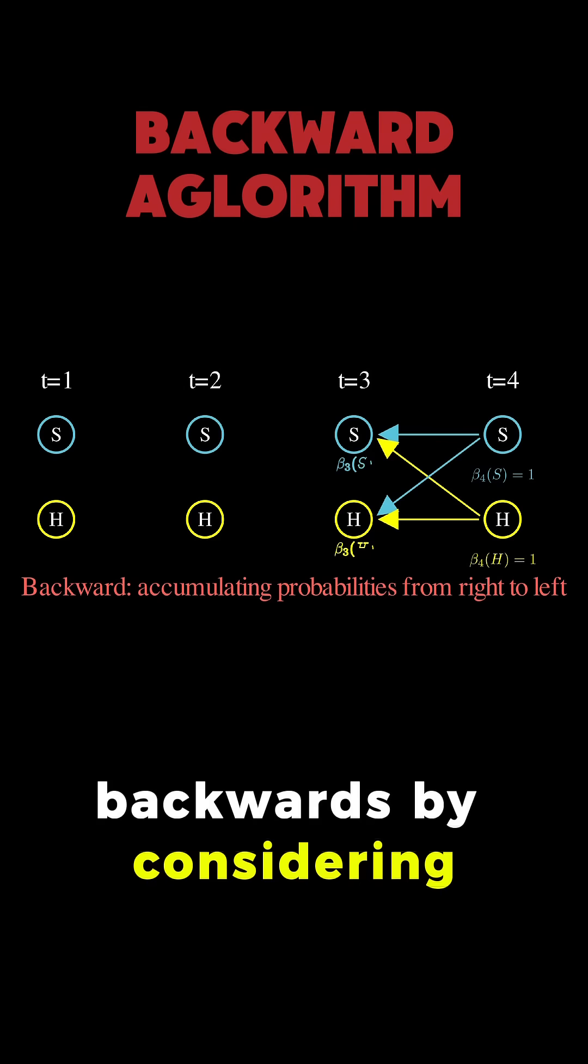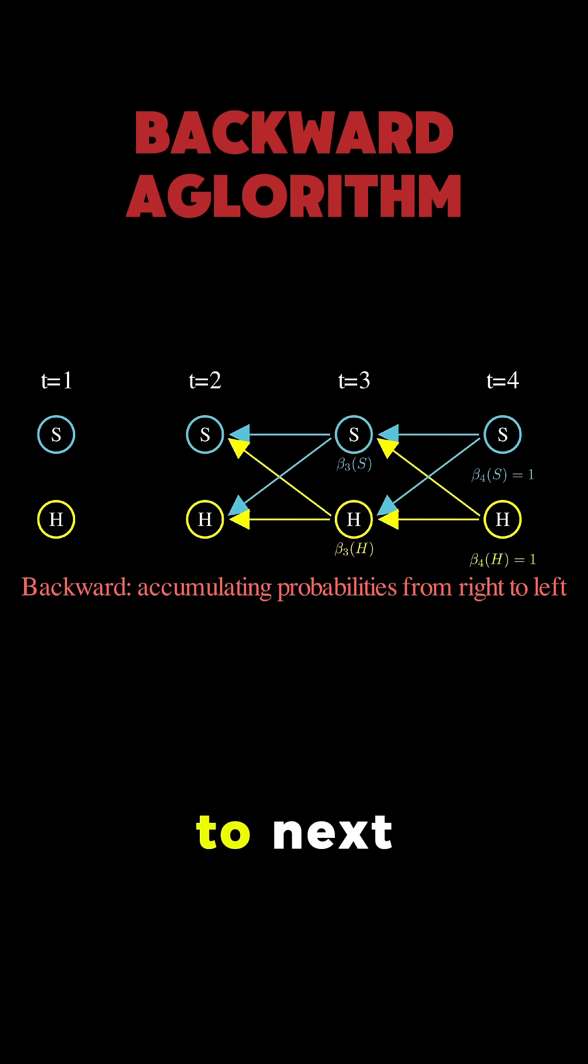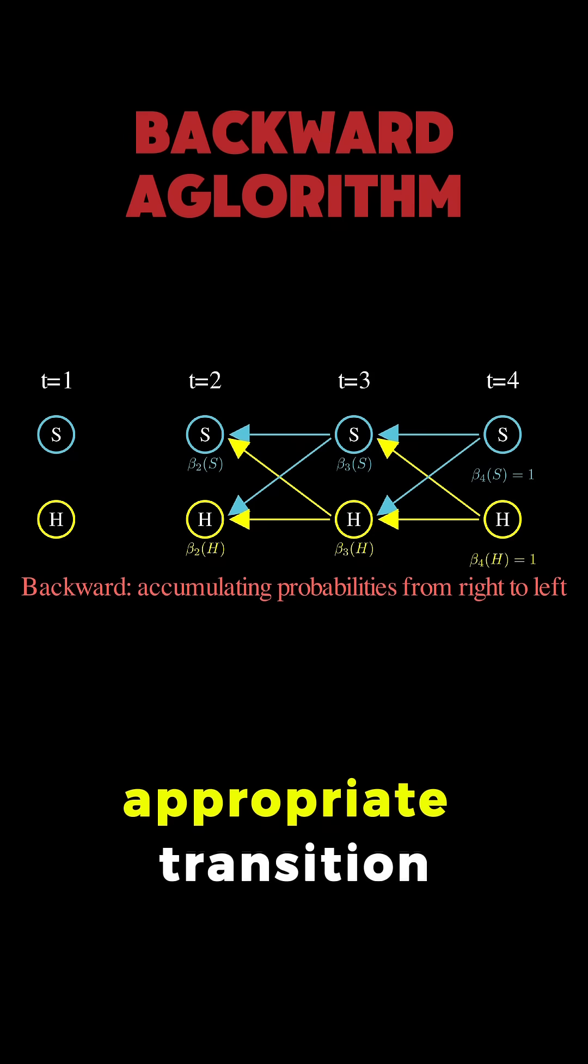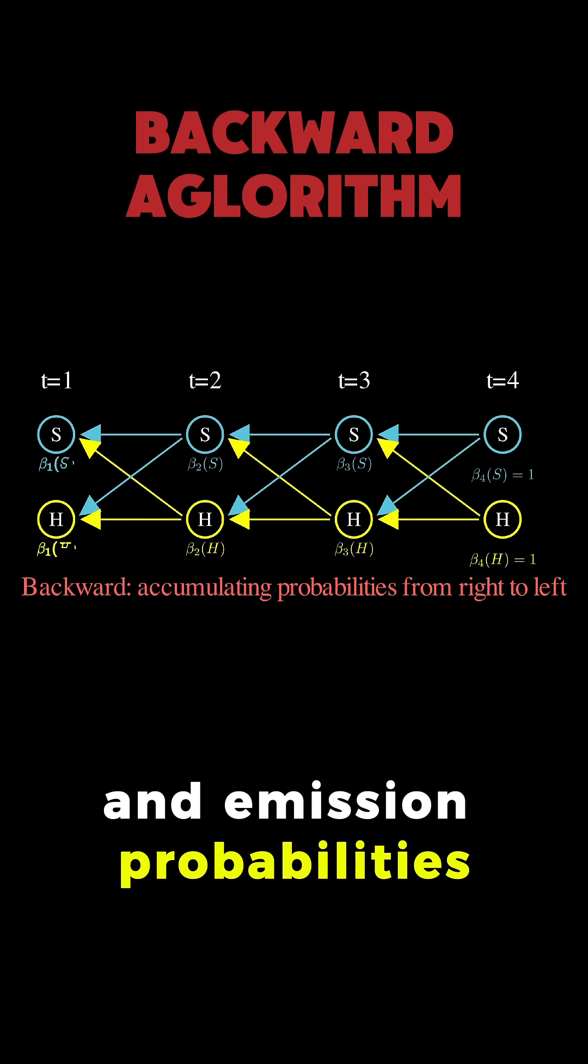Then we work backwards by considering all the states we could transition to next, multiplying by the appropriate transition and emission probabilities, and summing them up.